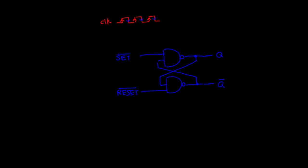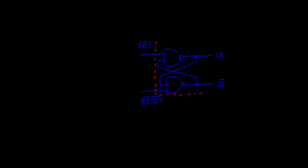Starting with my familiar NAND latch and a clock input, I can make this positive or negative edge triggered — let's start with positive edge triggered. I'm still going to have my active low set and reset inputs to my NAND latch. I'll draw a little box around it to indicate this building block — it's like I just took a NAND latch IC and plugged it into my breadboard. This part is just a NAND latch whose operation we're already familiar with.